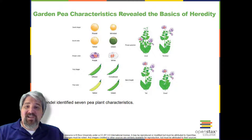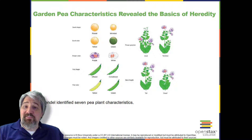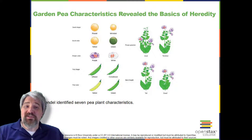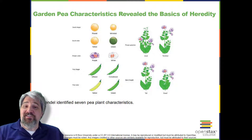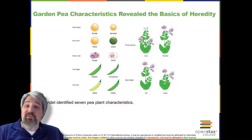An example of a dominant trait is the violet colored flower trait. For this same characteristic, flower color, white colored flowers are a recessive trait. The fact that the recessive trait reappeared in the F2 generation meant that the traits remained separate and were not blended in the F1 generation plants. Mendel proposed that plants possessed two copies of the trait for the flower color characteristic, and that each parent transmitted one of their two copies to their offspring where they came together. Moreover, the physical observation of a dominant trait could mean that the genetic composition of the organism included two dominant versions of the characteristic, or one dominant and one recessive version. Conversely, the observation of a recessive trait meant that the organism lacked any dominant versions of this characteristic.